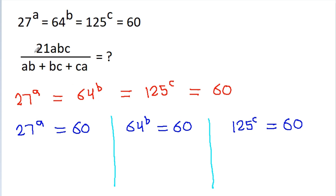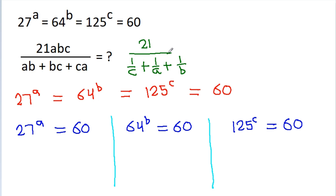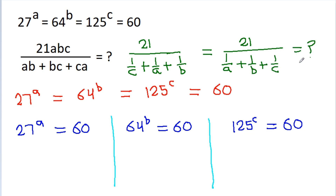Instead of finding the individual values of a, b, and c, if we divide the numerator and denominator by abc, then 21abc divided by abc will be 21, and ab divided by abc will be 1/c, bc divided by abc will be 1/a. So the expression becomes 21 divided by (1/a plus 1/b plus 1/c). Basically we have to find the value of 21 divided by (1/a plus 1/b plus 1/c).